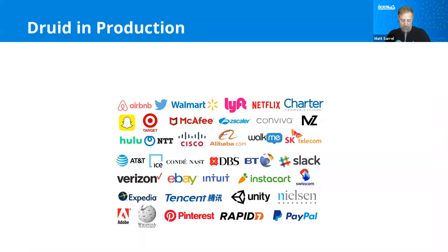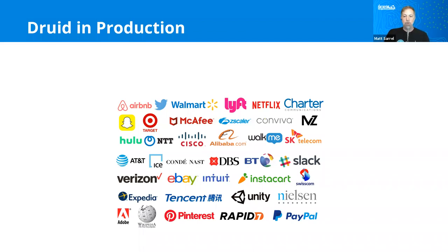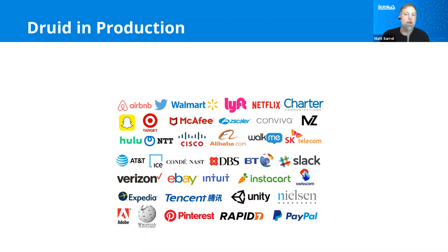So who's using Druid? This is where Druid's in production — not counting Imply customers. One that I think is really neat is Walmart, which is able to take inventory, pricing, and sales information from all of their stores in North America and run reports in far less time than before. They do this so they can do more dynamic pricing and more intelligent inventorying. That's a big problem of scale.